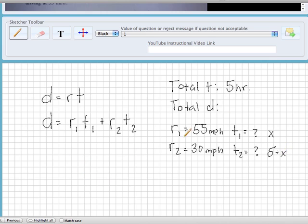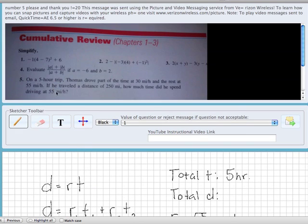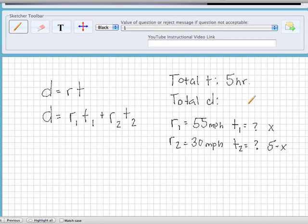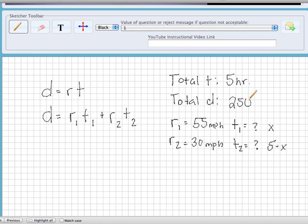And now all we have to fill in is D, the total distance. How far were we going, 250 miles, so that's what we're going to fill in for D. Looks like we're ready to fill in our equation now. So D is 250, rate one is 55 miles per hour, time one, that's just X, rate two would be 30, and time two is 5 minus X.